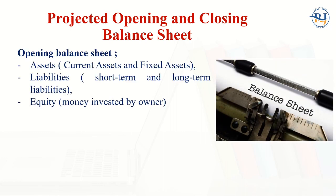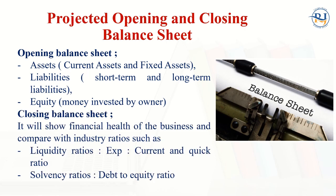The first one is the projected opening and closing balance sheet. The balance sheet has two sides: the asset side and the liability side. On the asset side we have current assets and fixed assets. On the liability side we have short-term and long-term liabilities, as well as equity — which is the money invested by the owner, sometimes called capital. You should know both the opening balance sheet at the start of the year and the closing balance sheet at the end of the year, to judge the financial health of the company.